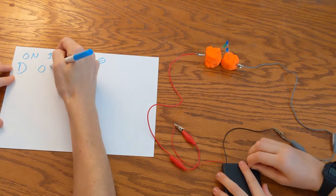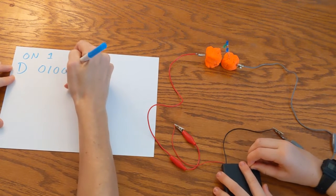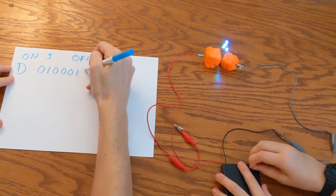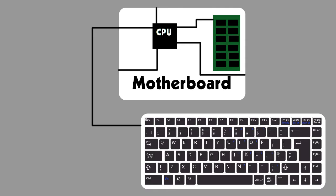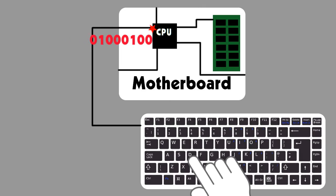Whenever a computer is sending a letter, it's really turning electricity on and off in a certain pattern that the computer recognizes as that letter. For example, if you push a letter key on the keyboard, the keyboard sends an electrical signal about that letter to the motherboard.